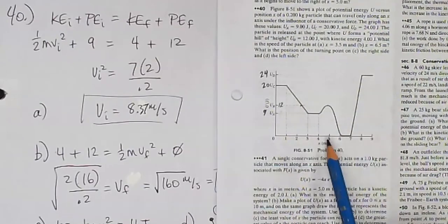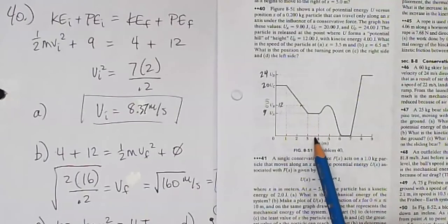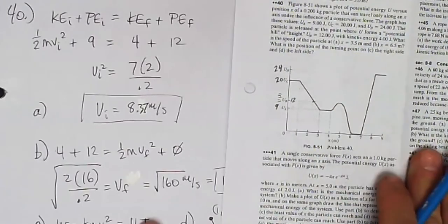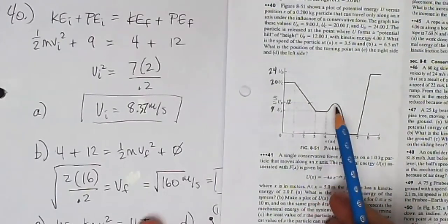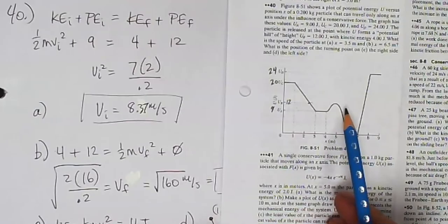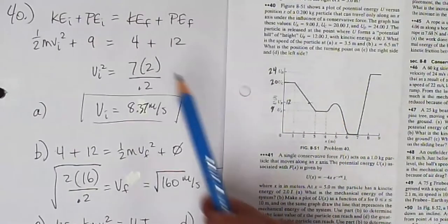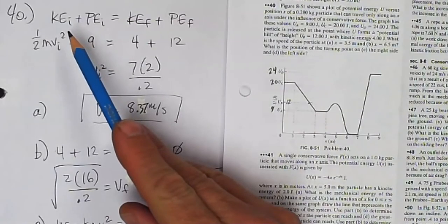What is the speed of the particle at x equals 3.5 and at x equals 6.5? So we know that the total mechanical energy of the particle is fixed. It doesn't change. So the sum of U plus K is always the same. So that's what I start off with here.